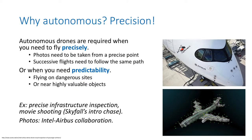Autonomous drones are also required when you need to fly precisely. For example, photos need to be taken from a very specific point in space, or successive flights need to follow the same path every single time.